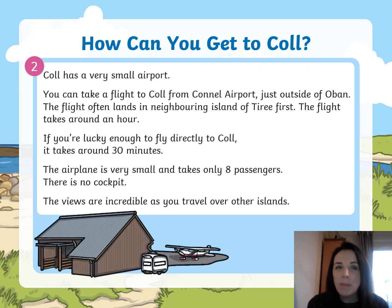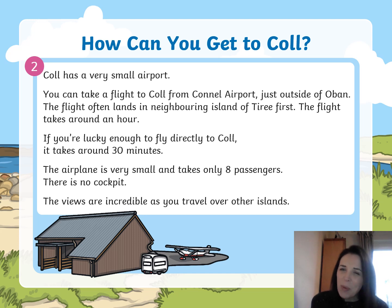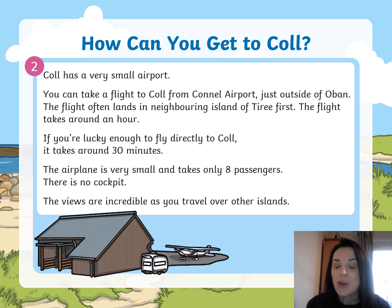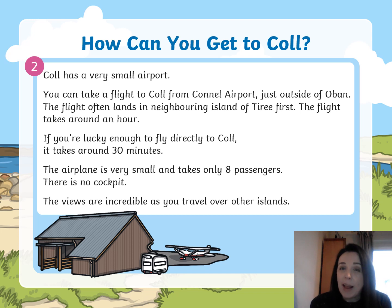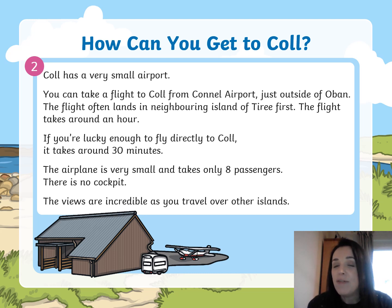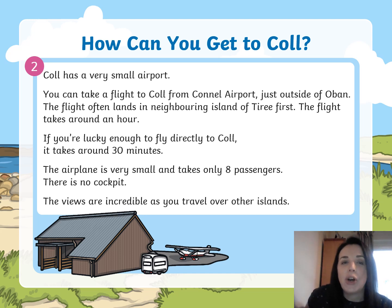How else can you get there? The second way is they have an airport. You can take a flight to Coll from Connell Airport, just outside of Oban. The flight often lands on the neighbouring island of Tiree first, and takes around an hour. If you're lucky enough to fly directly to Coll, it takes around 30 minutes.